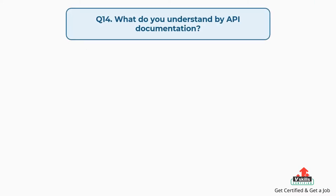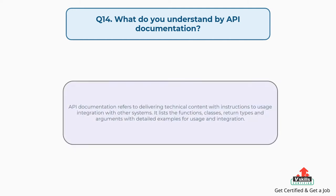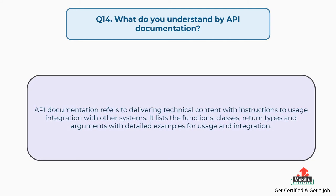Question number fourteen: what do you understand by API documentation? API documentation refers to delivering technical content with instructions for usage and integration with other systems. It lists the functions, classes, return types, and arguments with detailed examples for usage and integration.